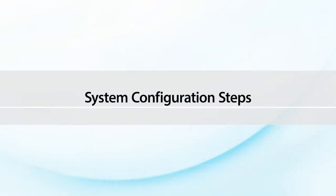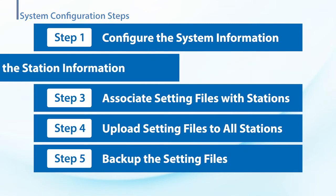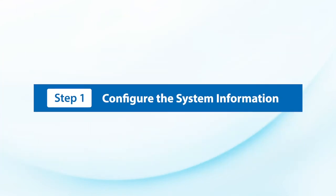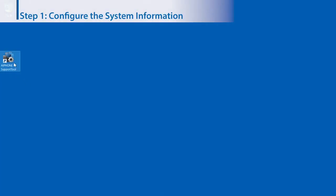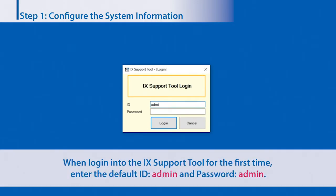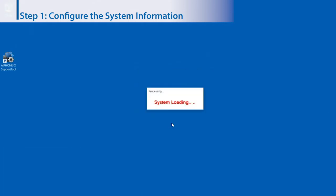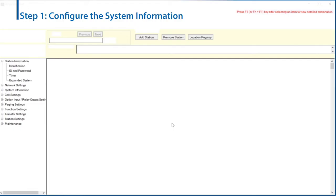System Configuration Steps. The system configuration consists of five steps. Step 1: Configure the system information. Start the IX support tool application. Enter ID and password, then click Login. The new system screen is displayed.